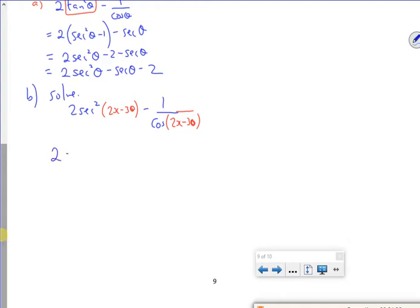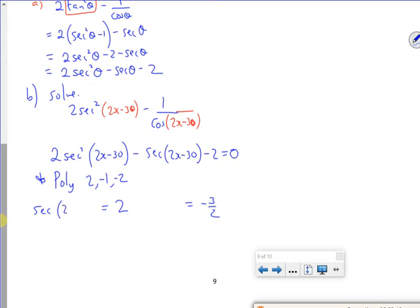So I've got, in part a, I've got 2 secant²(2x-30) minus secant... no, no. Minus 2 is 0. So if I put that into poly with a 2 minus 1 and a minus 2, that's going to give me secant(2x-30) equals 2 and secant(2x-30) equals minus 3 over 2.